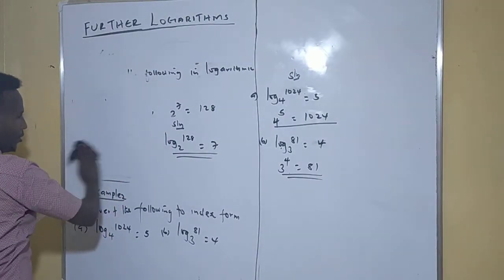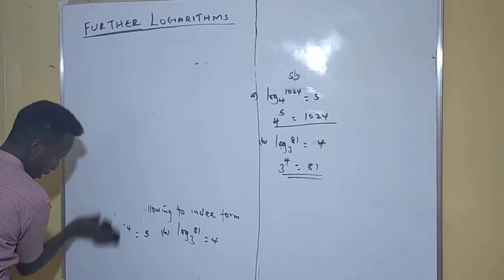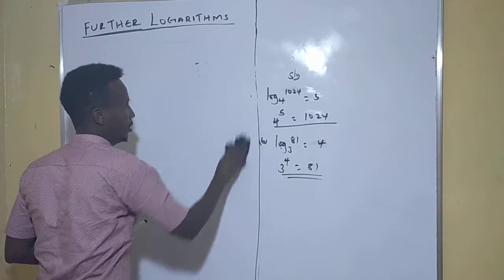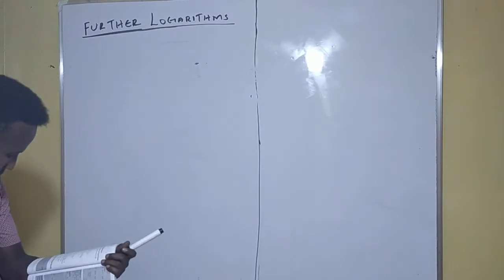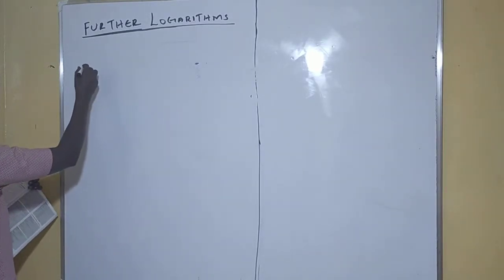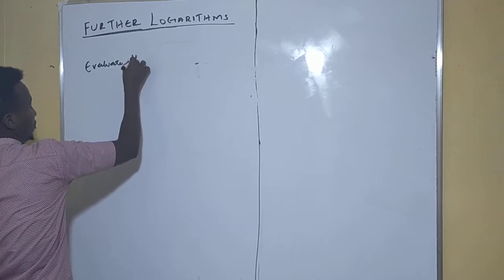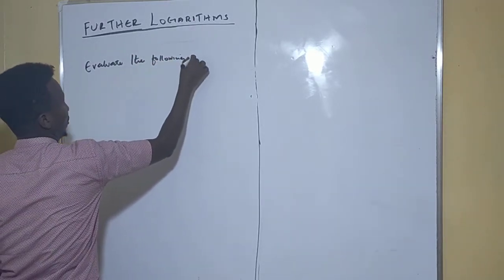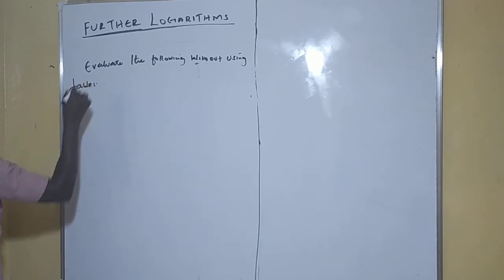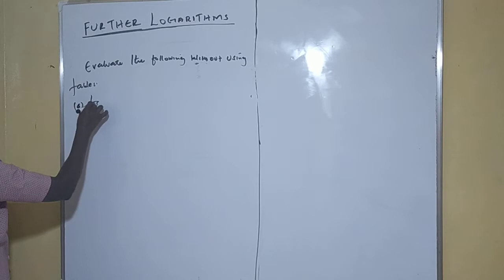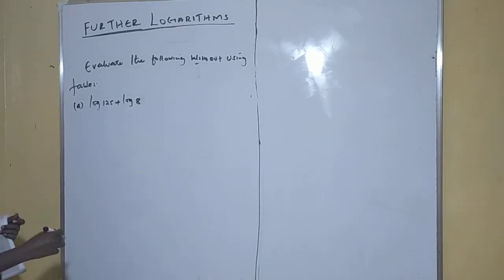Let's see Example 3: Evaluate the following without using tables. So here we have equation A: log 125 plus log 8.